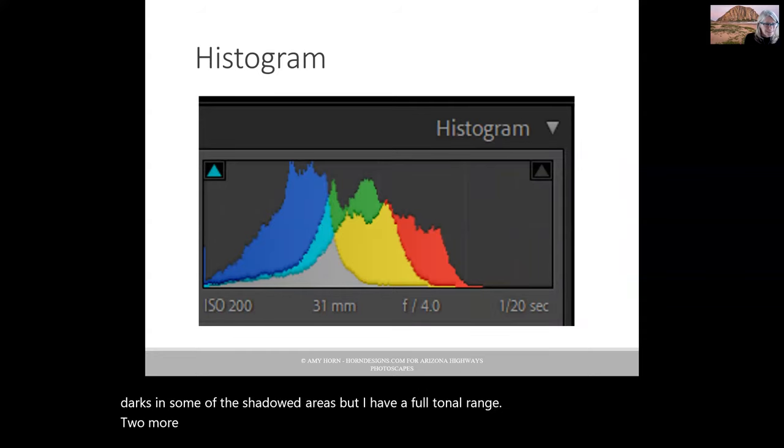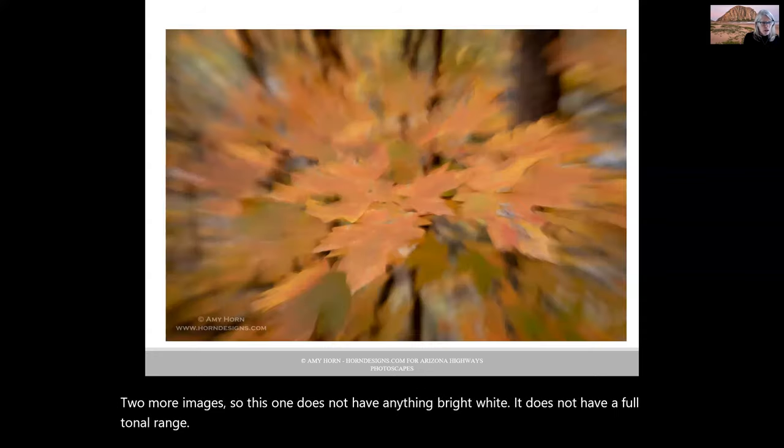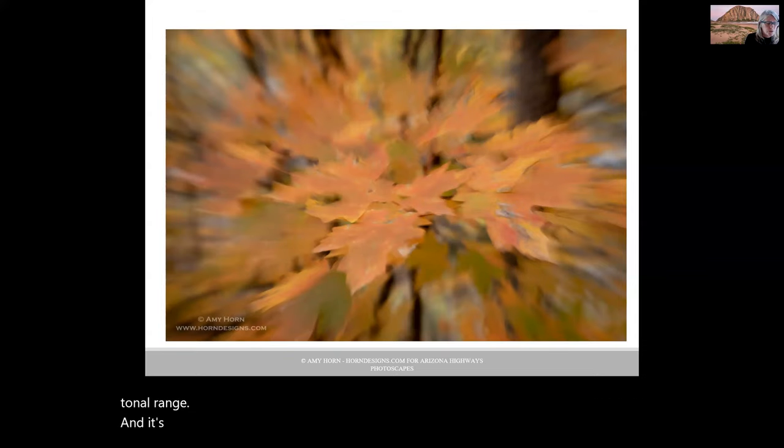Two more images. This one does not have anything bright white. It does not have a full tonal range. And it's exactly as you would expect. After shooting this image, if I see that histogram, I'm going to know that I exposed the image correctly. If I had a histogram with the whites all the way to the bright whites, it would not be a proper representation of my subject.